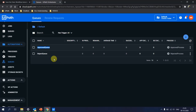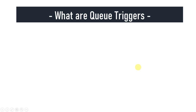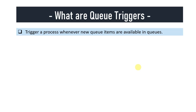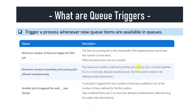A Queue Trigger is a trigger that fires whenever a new item is available in the queue. The configurable options include: Minimum Number of Items to Trigger the First Job (default is 1, but you can set it to 2, 3, or more), Maximum Number of Pending and Running Jobs Allowed Simultaneously, and Another Job is Triggered for Each New Row. Full details are available in the official UiPath documentation — I'll provide the link in the description.